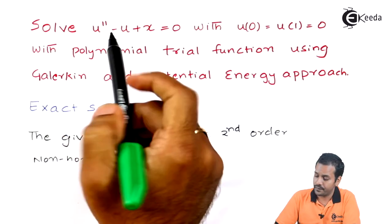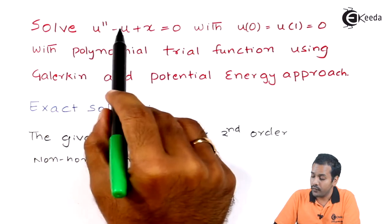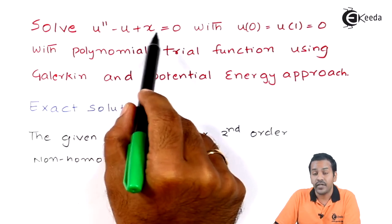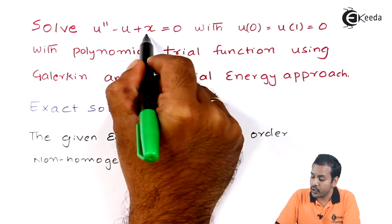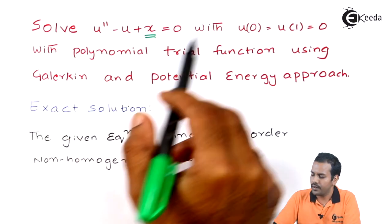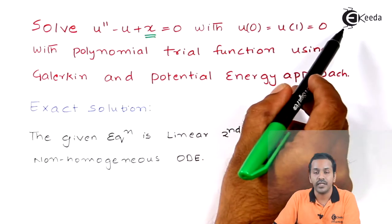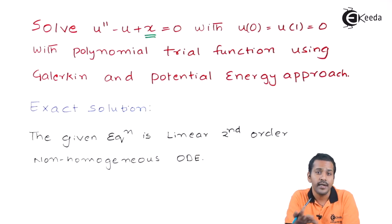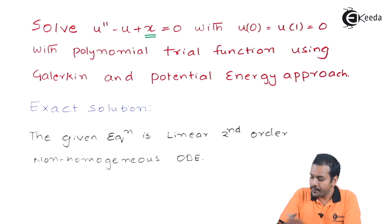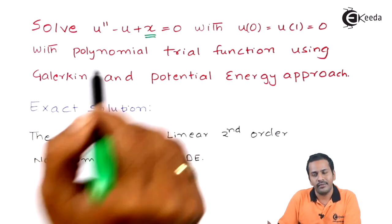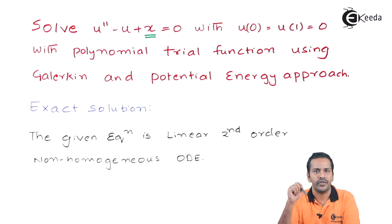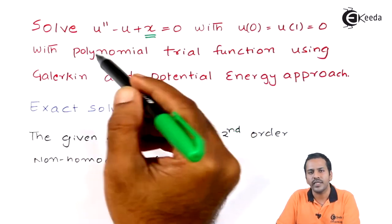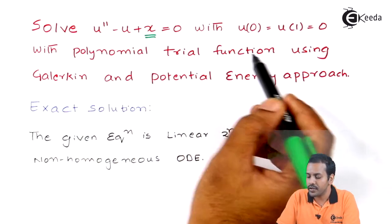Let us take a simple example. The problem is we are solving u double prime minus u plus x is equal to 0. This is a second order ordinary differential equation which is non-homogeneous because of the x term. With boundary conditions u(0) = u(1) = 0. We have to solve this using the Galerkin method, using Rayleigh-Ritz, and also find the exact solution to compare all three. Until now we have used sinusoidal trial functions; right now let us apply polynomial trial functions.